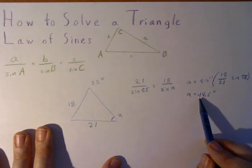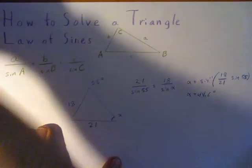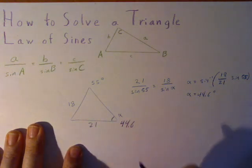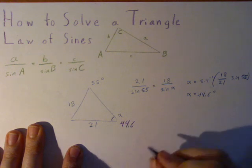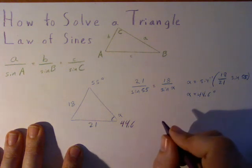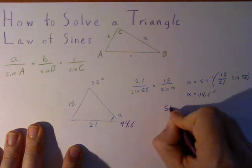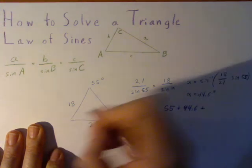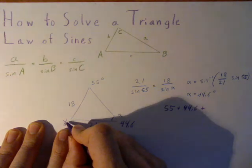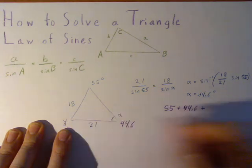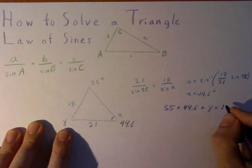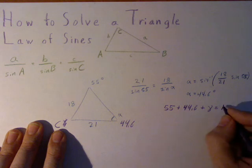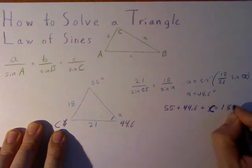With this information, we now have two angles of our triangle. We have 44.6. Now, using the relationship that all the angles of the triangle equal 180 degrees, 55 plus 44.6 plus our other angle, I'll call it C, equals 180 degrees.